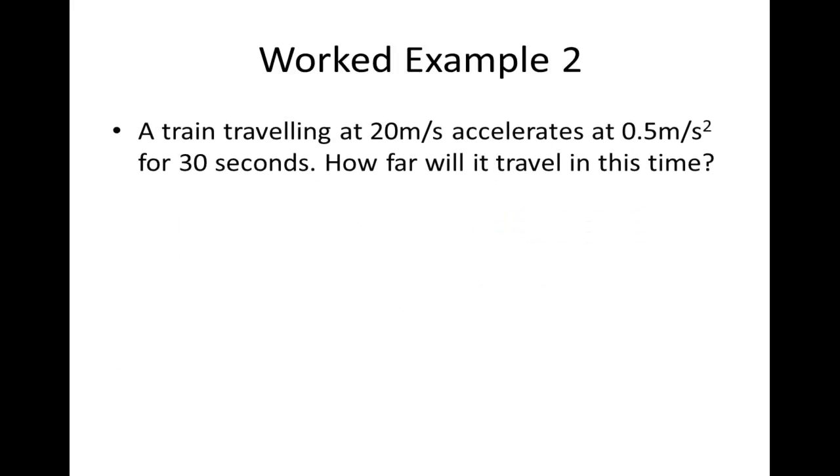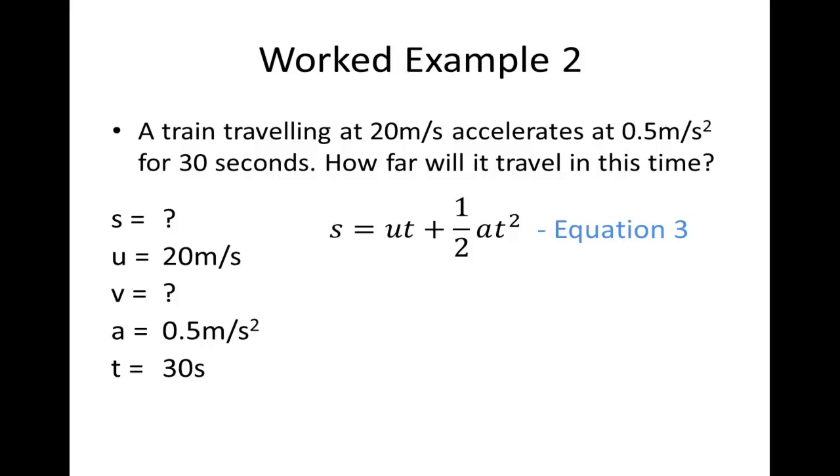Let's look at another example. A train is traveling at 20 meters per second and accelerates at 0.5 meters per second squared for 30 seconds. How far will it travel in this time? Again, similarly, listing our SUVAT variables and we insert the values we know from the question. In this case, we want to know the displacement or S and we can discard V. So, an equation which has S, U, A and T, that will be equation 3. And again, inserting all our values that we know, we find that the displacement or distance is 825 meters.